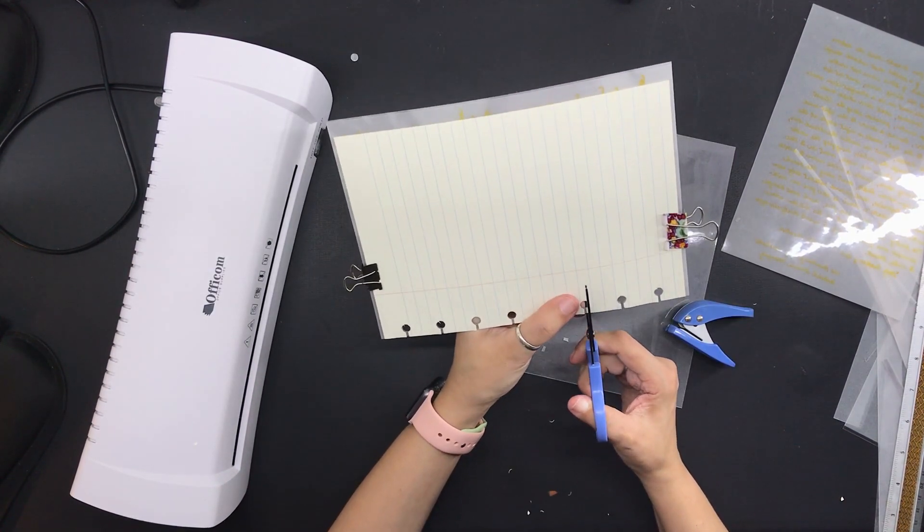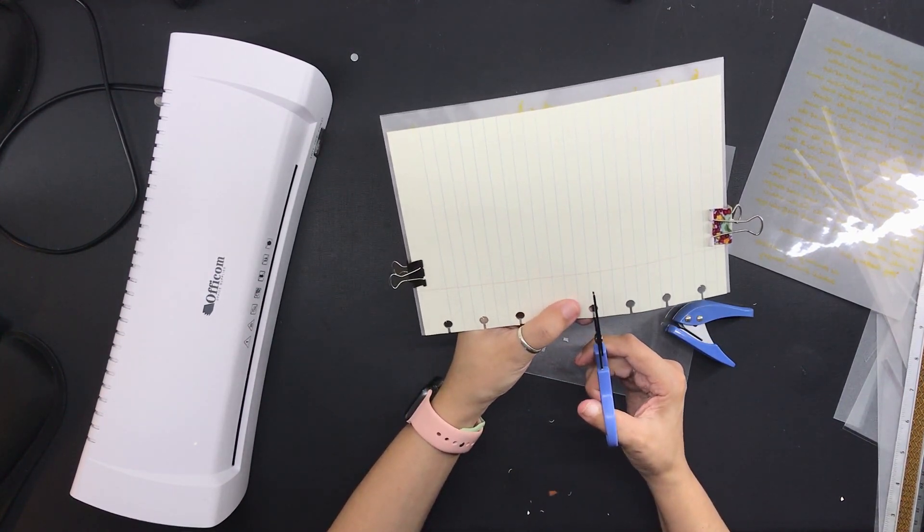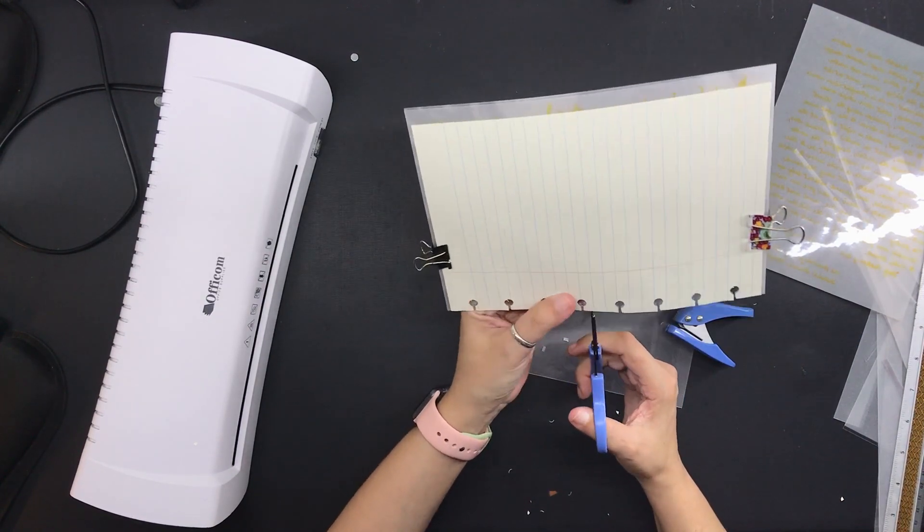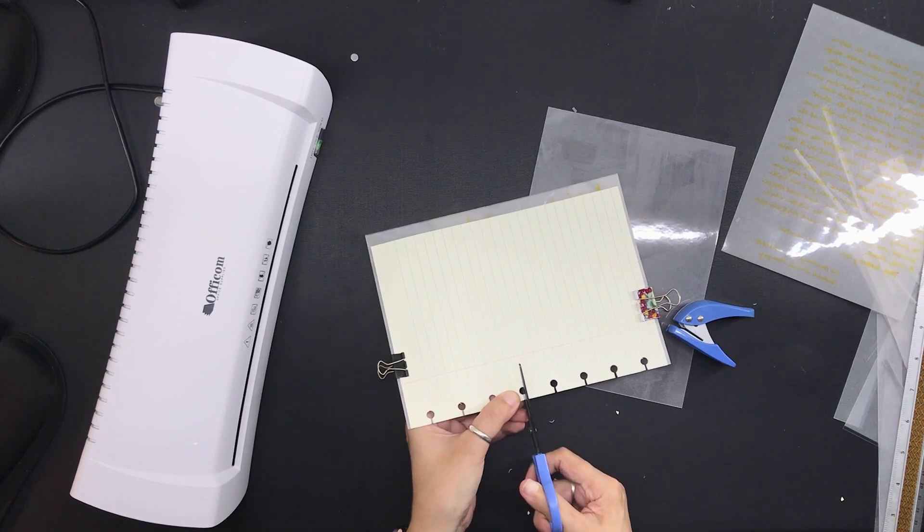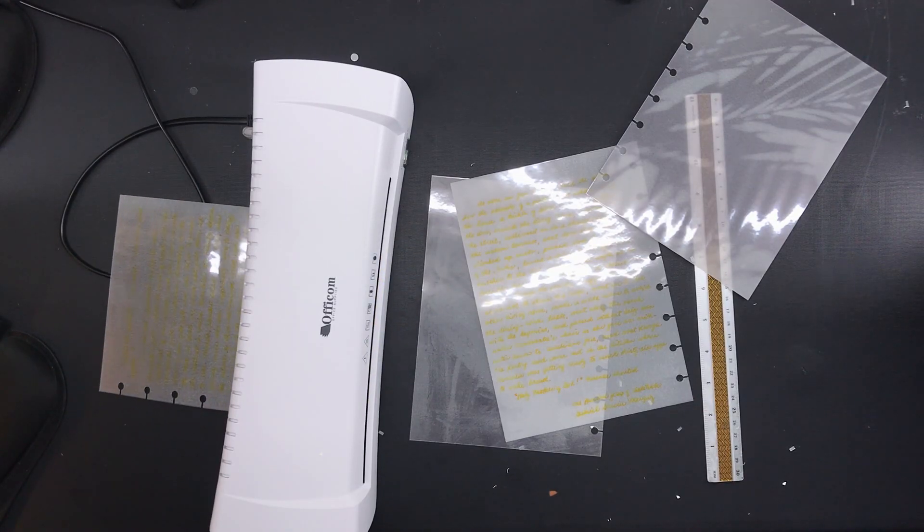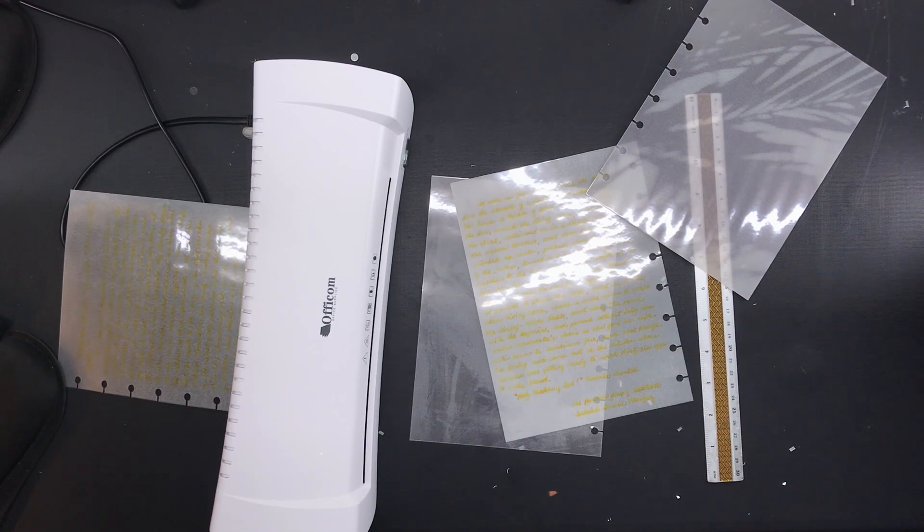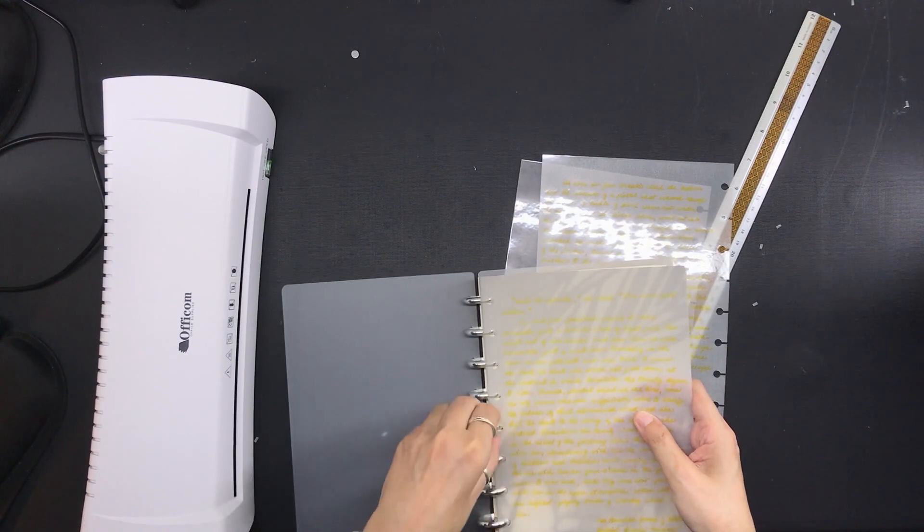This has always been how I hole punch plastic sheets that I'm going to be putting in the disc-bound. I do have a Happy Planner punch, but I don't use that for plastic because it jammed once and I'm never doing that again. After hole punching everything, I ran them a couple of times more through the laminating machine and then I placed them on the discs.